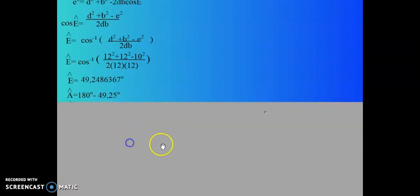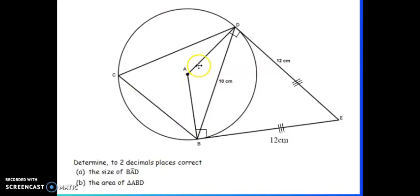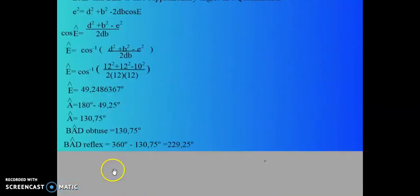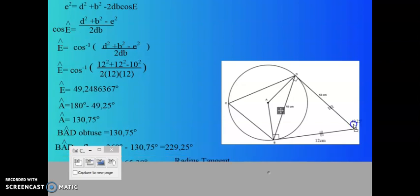Next thing is that A will be equal to, remember E and A is supplementary. So 180 degrees minus that angle will give me the size of angle A. So that's 130.75 degrees. Remember what I said, there is two angles at BAD. There is the obtuse angle and then there is the reflex angle. We calculated the obtuse angle. But remember if they should ask you what's the size of the reflex angle, that will be 360 degrees minus the 130.75 will give you 229.25.